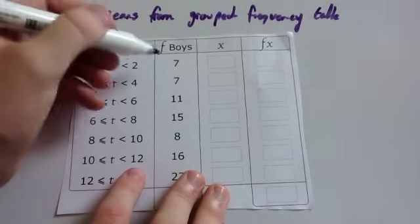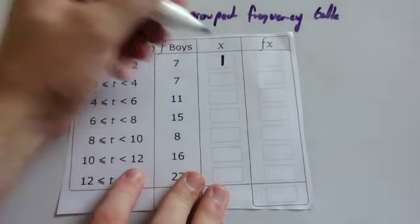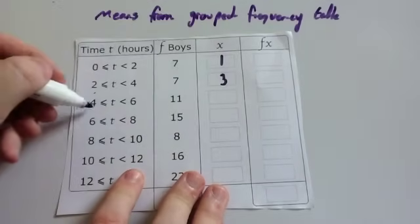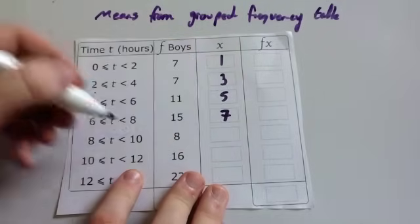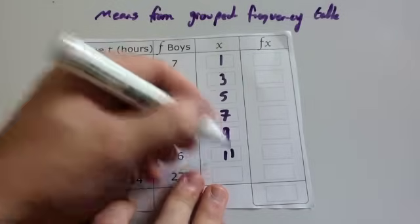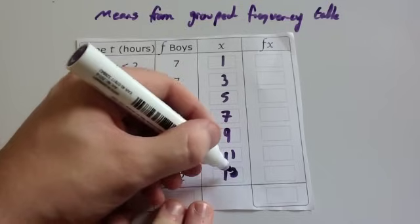So what we're going to do is multiply by the midpoint. The midpoint of 0 to 2 is 1. The midpoint of 2 to 4 is 3. The midpoint of 4 to 6 is 5. 6 to 8 is 7. 8 to 10 is 9. 10 to 12 is 11. And 12 to 14 is 13. So we've worked out all our midpoints.